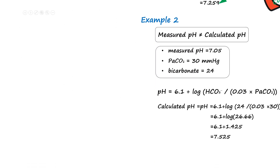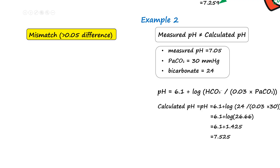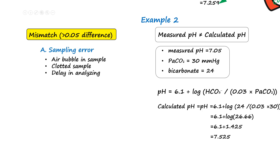On the other hand, as shown in example 2, if the measured pH and calculated pH mismatch significantly, the first step is to suspect a sampling error, such as air contamination, clot formation, or a delay in processing that allowed ongoing metabolism in the sample.